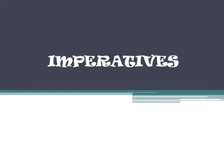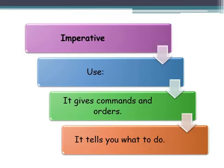今天我们来学起始句 Imperative. Imperative就是起始句. So what is imperative? We use imperative to give commands and orders. 什么是commands and orders? 就是说我们要给予命令，我们要叫别人做事情的时候，我们就需要用到imperative sentences，就是起始句. It tells you what to do.